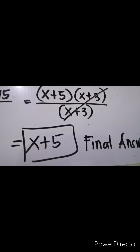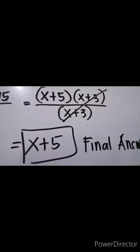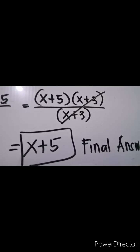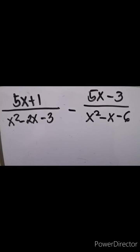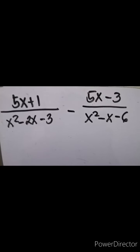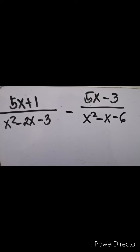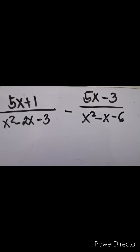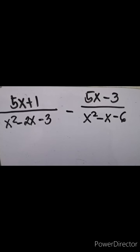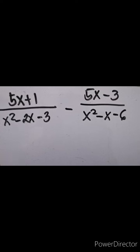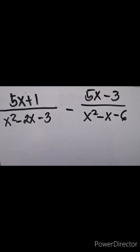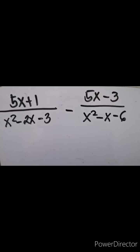That is the simplified form of the given rational expression. The next example is: 5x plus 1 over x squared minus 2x minus 3, minus 5x minus 3 over x squared minus x minus 6. The first thing we need to do is to factor out the denominators.